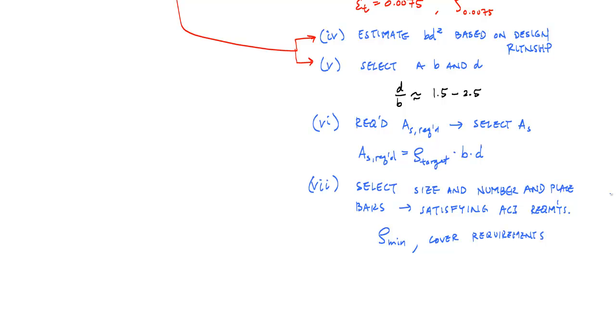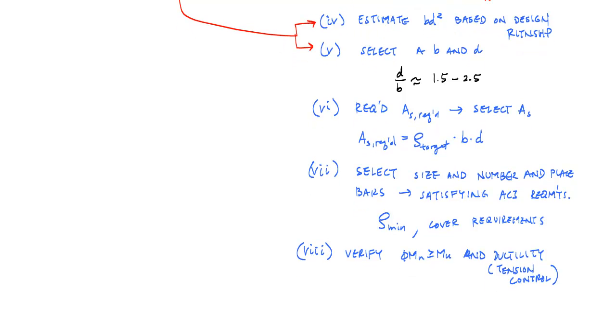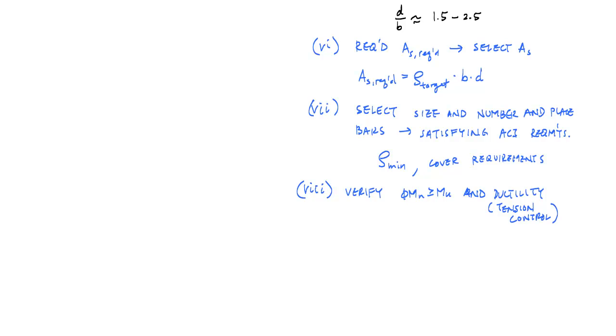And what you need to do is verify that this cross section. It's always a good idea to verify phi MN is greater than or equal to MU, or at least the ductility, meaning that it's tension controlled. And after you've done that, then if you've covered shear already or you understand what shear is, you want to with this design, you want to check. Really, this next part is to check, I have eight, number nine, check shear. Check phi VN greater than or equal to VU of your design. And then you'd be done with the cross section design.